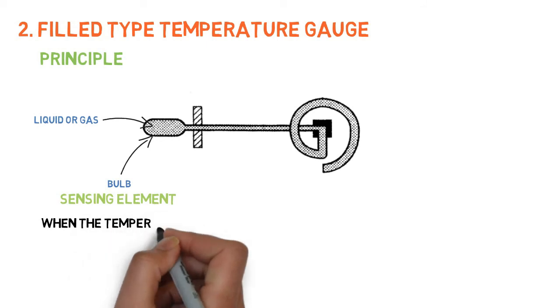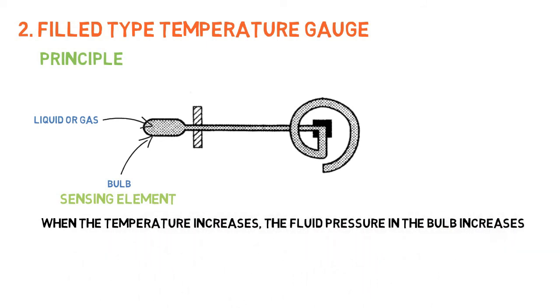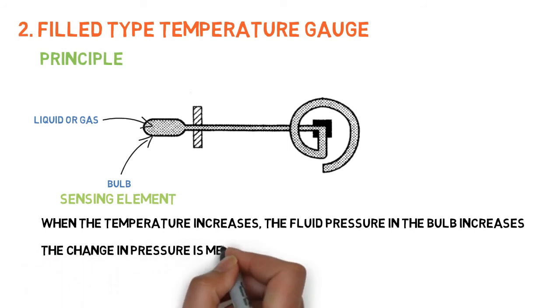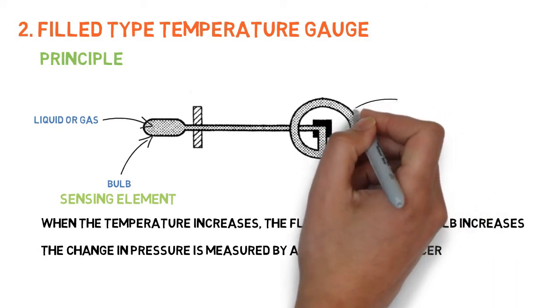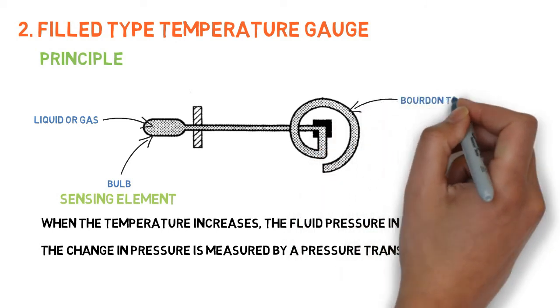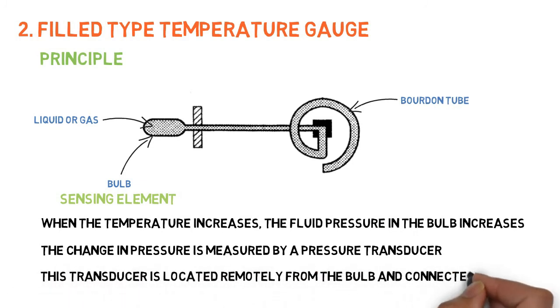When the temperature increases, the fluid pressure in the bulb increases. The change in pressure is measured by a pressure transducer such as a Bourdon tube. This transducer is located remotely from the bulb and connected to it by a capillary tube.